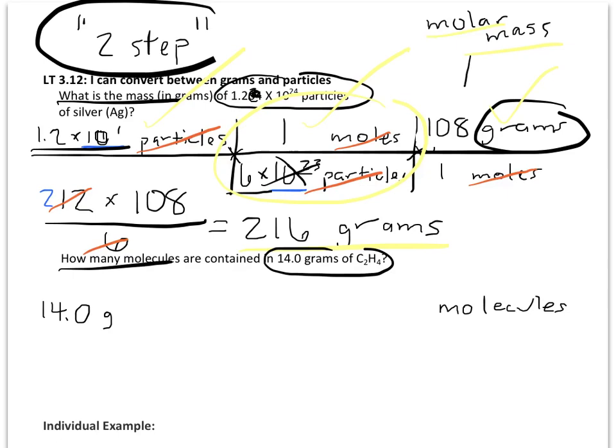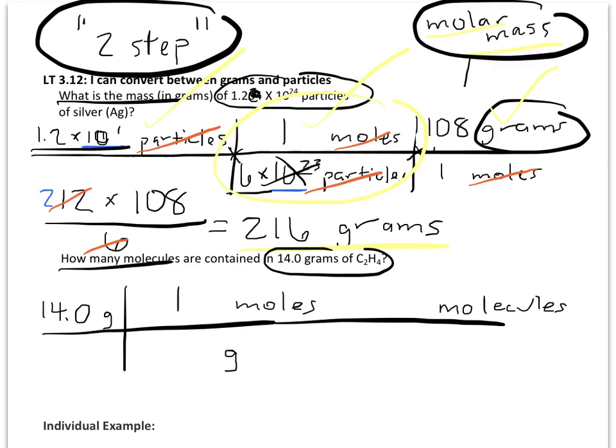And we know we're going to want to end up with molecules. So again, this is going to be a two-step conversion. Our first conversion factor, we know we need to have grams. And we can't go directly to molecules, so we're going to actually go to moles first. So, we know that if we have one mole of something, we're going to look at the molar mass. And for C2H4, that would be 12 plus 12 plus 4, which is 28.